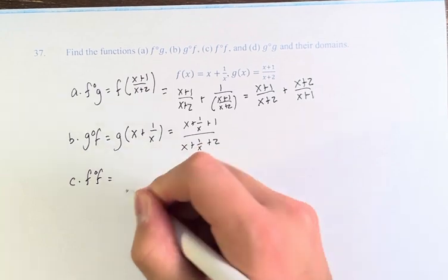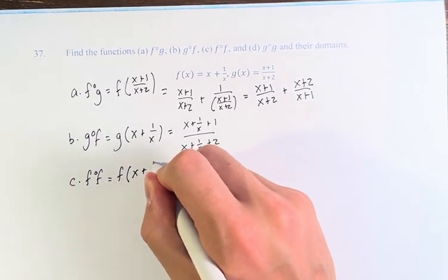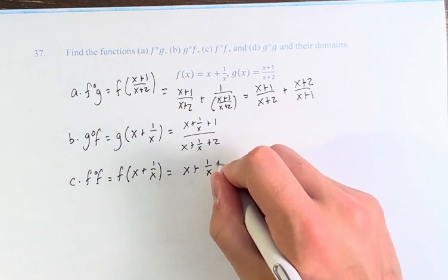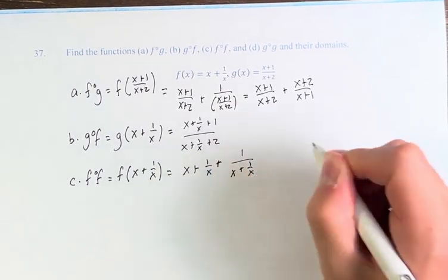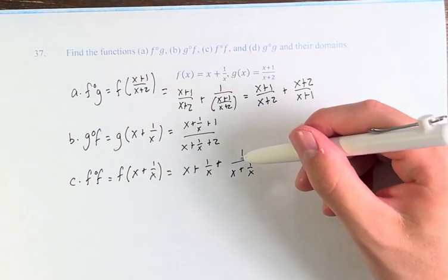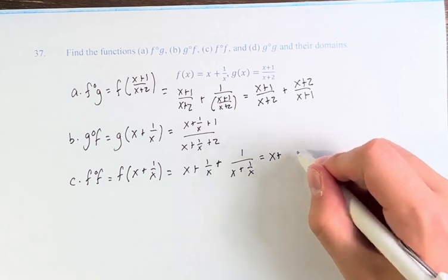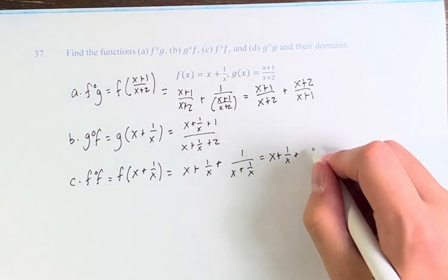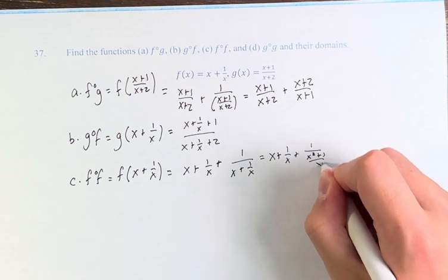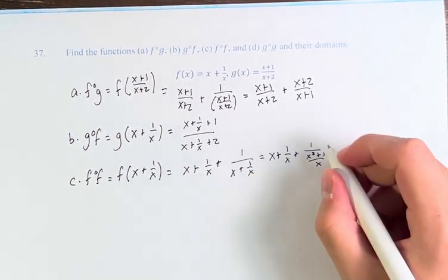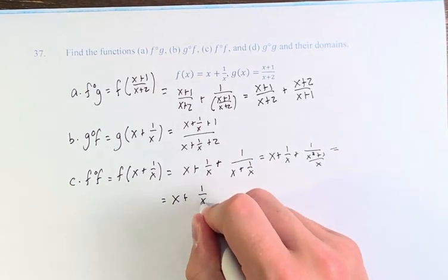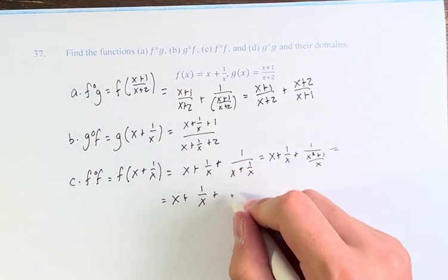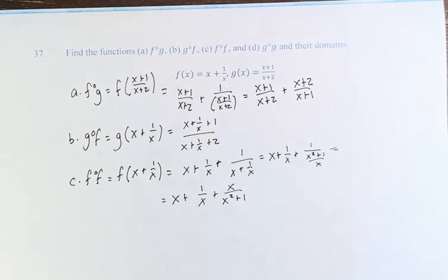For f of f, this is f of itself, which is f of (x plus 1 over x). So we plug in x plus 1 over x for x: (x plus 1 over x) plus 1 over (x plus 1 over x). We can simplify a bit — this is x plus 1 over x plus, getting the same denominator, x squared over x, so 1 over (x squared plus 1 over x) by combining those two fractions. This equals x plus 1 over x plus, multiplying by the reciprocal, x over (x squared plus 1).